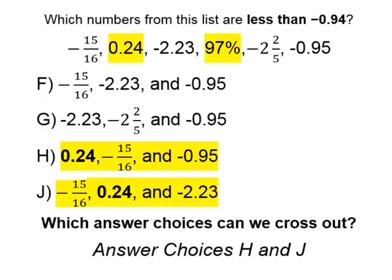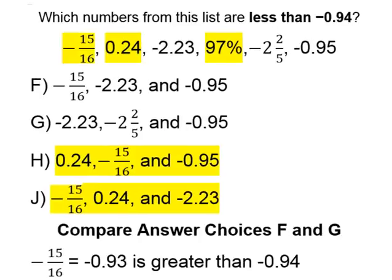With test prep, first look to see which answer choices you can eliminate. Once you can eliminate some, it helps build your confidence — instead of choosing between four answer choices, now you only have two. The two remaining choices are F and G. We eliminated H and J because they contained positive point twenty-four. Now we need to convert negative fifteen over sixteen. When we convert that fraction to a decimal, it is negative point nine three seven five, approximately negative point nine three.